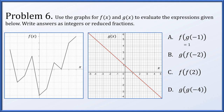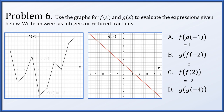For g of f of negative 2: f of negative 2 appears to give negative 1, then g of negative 1 is 2, so the result is 2. For f of f of 2: f of 2 gives 1, then f of 1 gives negative 3, so f of f of 2 is negative 3. For g of g of negative 4: g of negative 4 gives 5, then g of 5 gives negative 4, so g of g of negative 4 is negative 4 again.